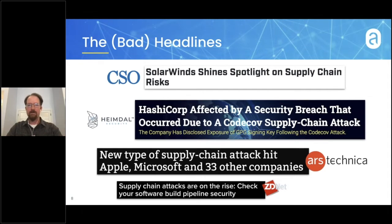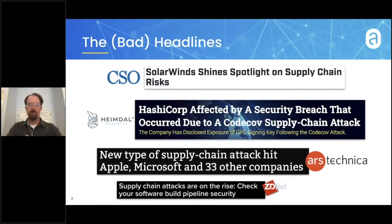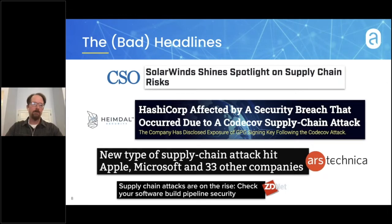We've seen a lot of headlines: the SolarWinds incident, and more recently the CodeCov situation. Attached to all of these incidents, we see the phrase 'supply chain.' A lot of industry attention has been put on why are these things happening, is this new, is this particularly important? We wanted to cover this to figure out more detail about what supply chain security really means, and then move into practical suggestions about what you can do to mitigate some of these attacks and make sure your organization is protected.